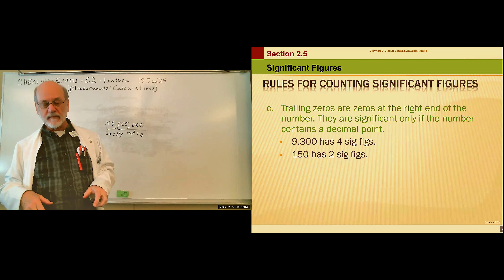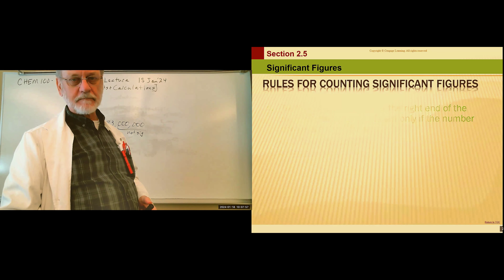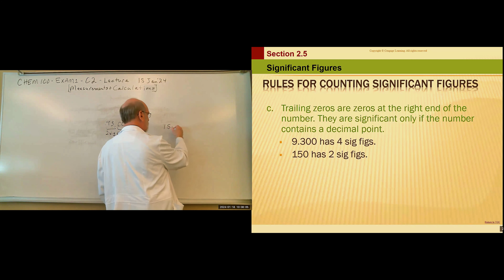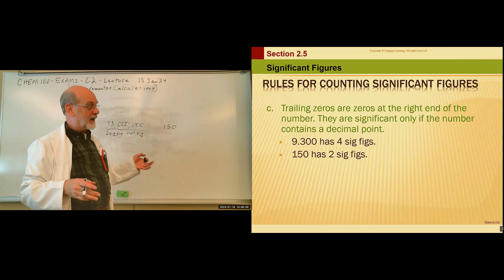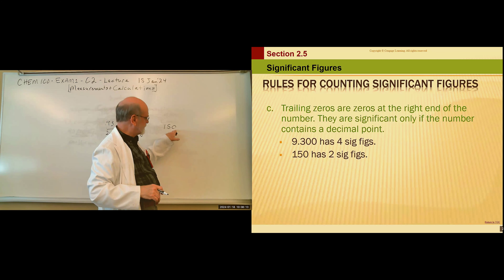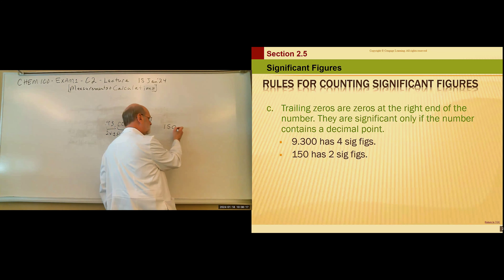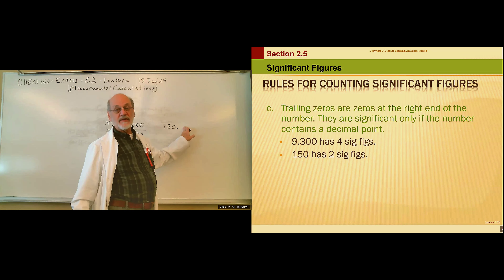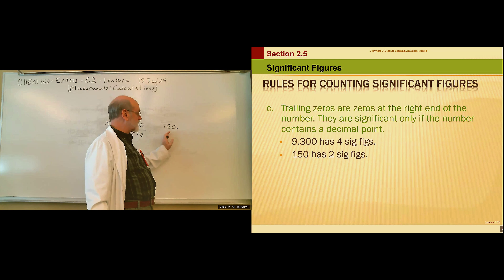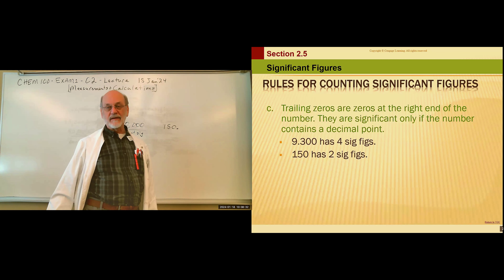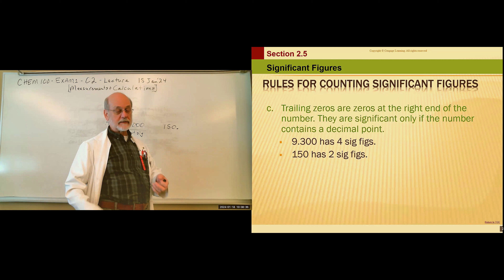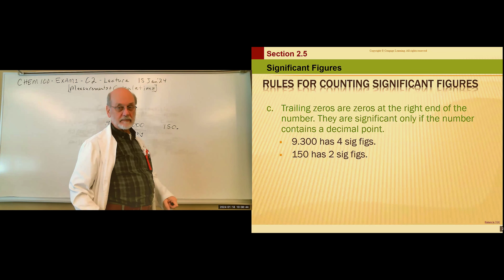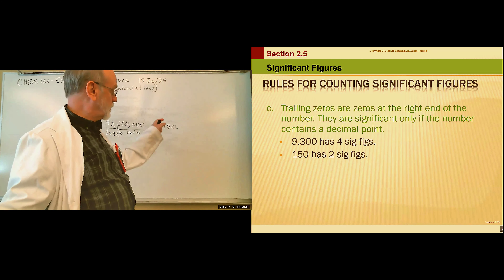Suppose we made a measurement and meant to make that last zero significant. How do you do it? You put a decimal there. Here's the rub: we can't put another zero on the right because that would add another significant figure. So when the decimal is to the right of a trailing zero, we have to leave it hanging — there's just no way around it to be consistent with our rules. That number would then have three significant figures.